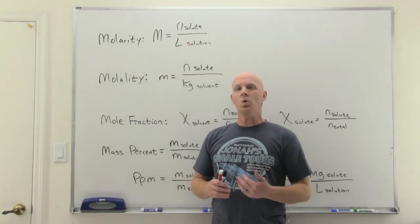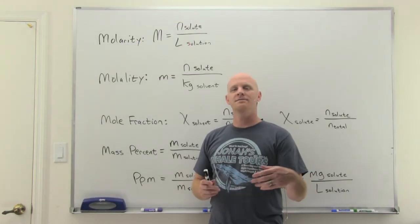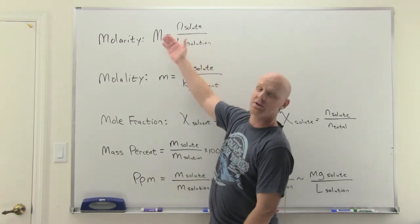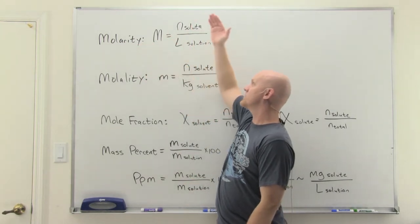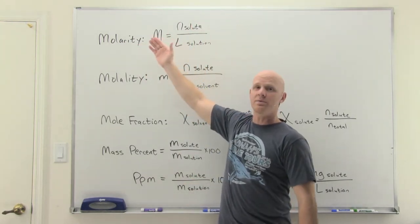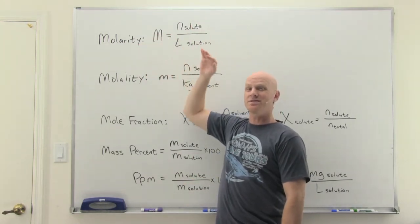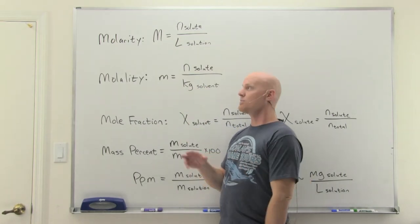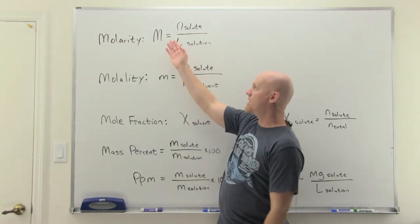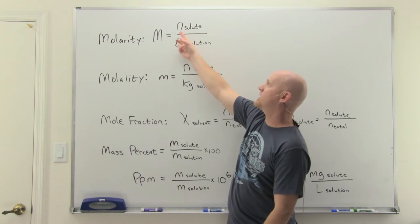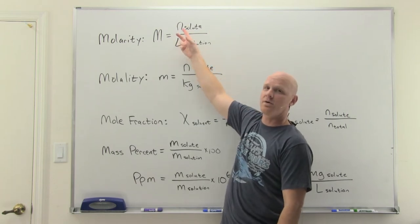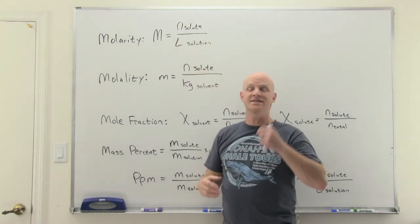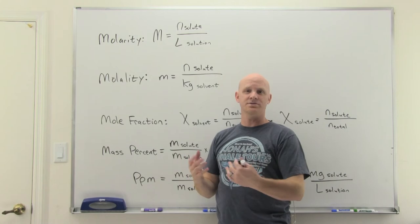Now let's look at the various ways we measure concentration. Molarity, the most common, is moles of solute per liter of solution. What's likely new in this chapter is molality — symbol lowercase m — which is moles of solute per kilogram of solvent (not liters of solution).